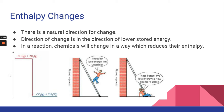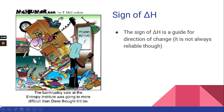However, endothermic reactions can also be spontaneous. So enthalpy is only one of our ways of determining if a reaction will take place spontaneously or not. The sign of ΔH — positive or negative — helps us guide the direction of the change, but it's not always reliable. So you have to think about entropy.